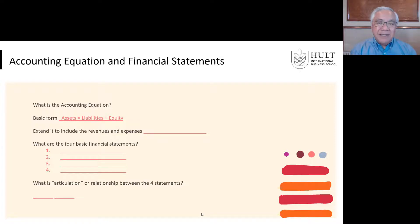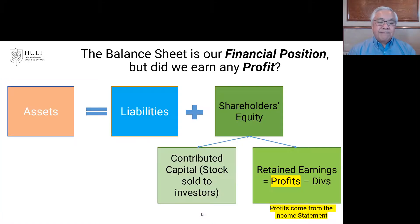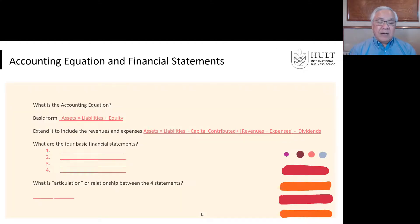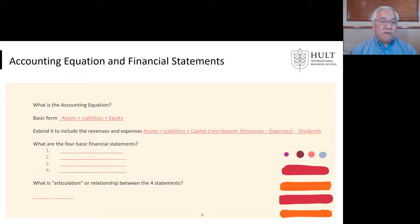What happened to income and expenses? Let's break out shareholders' equity. There's contributed capital — stock sold to investors — and retained earnings, which are profits made over the years minus dividends paid. That's the connection: the income statement links to the balance sheet through retained earnings. So we can extend the formula to include income statement items: assets equals liabilities plus contributed capital plus revenue minus expenses over all these years, minus dividends paid over all these years.